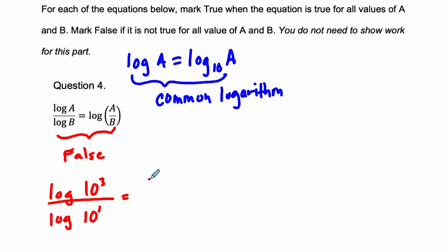Just using order of operations, that would be 3 divided by 1. 10 to what power is 10 to the third? That's 3. And 10 to what power is 10 to the first? It's just 1. So this side of the equation right here equals 3.